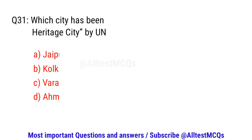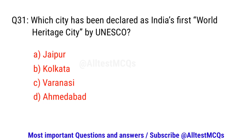Question number thirty-one. Which city has been declared as India's first World Heritage City by UNESCO? The right option is D. Ahmedabad.